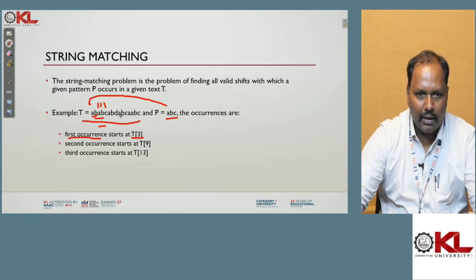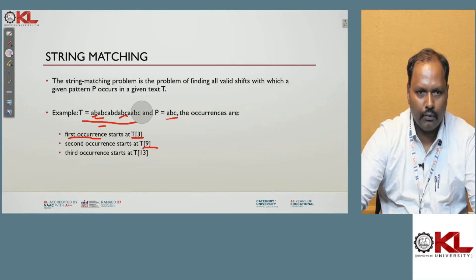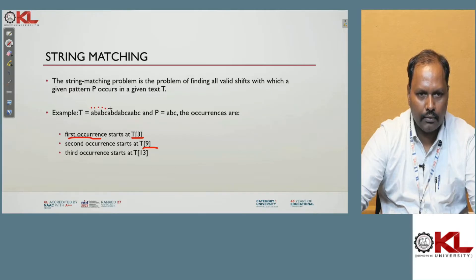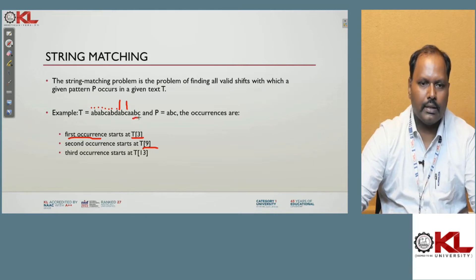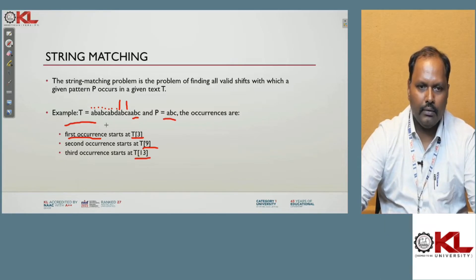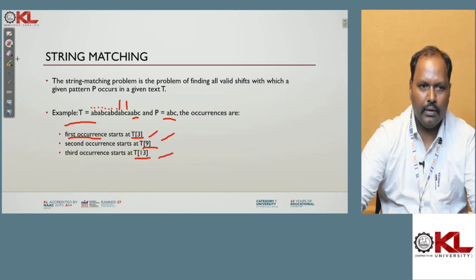The first occurrence starts at T[3]. After finding the match at positions 3, 4, 5, we look for any other occurrences. The second occurrence starts at T[9] — counting positions 1 through 8 and then position 9, where A, B, C matches. The last occurrence is at T[13]. So there are 3 occurrences: T[3], T[9], and T[13].